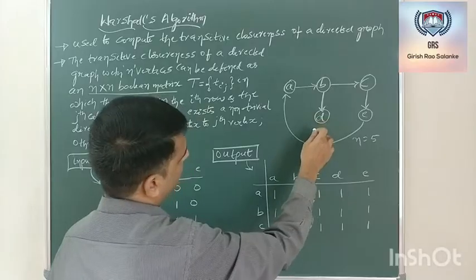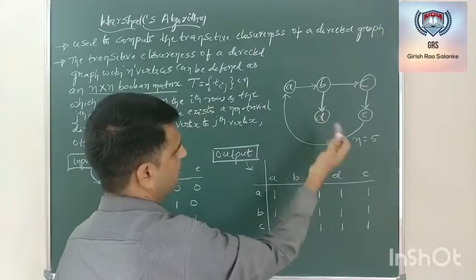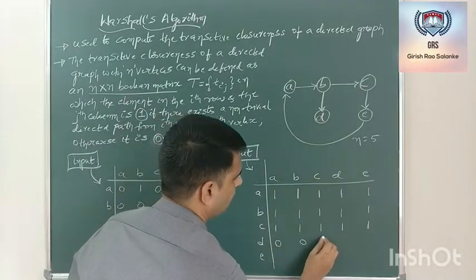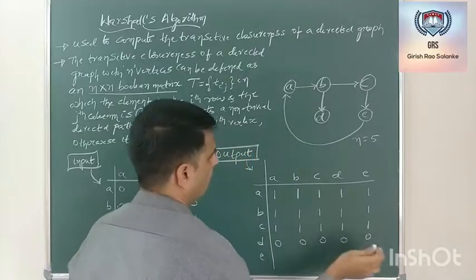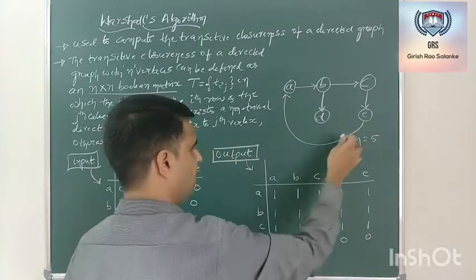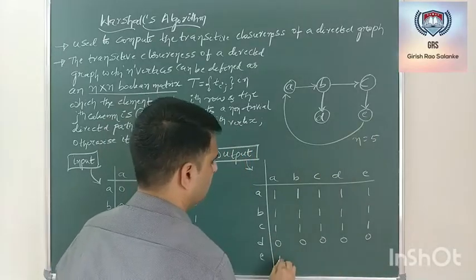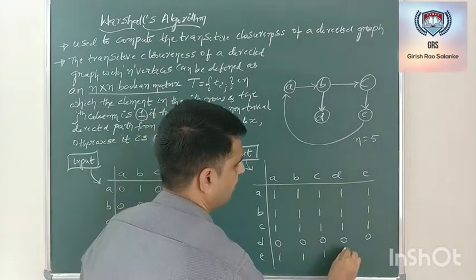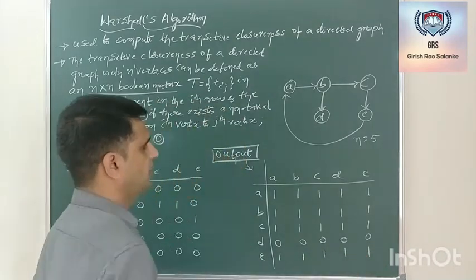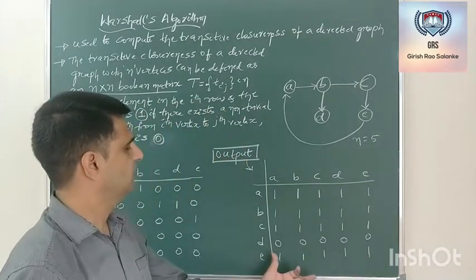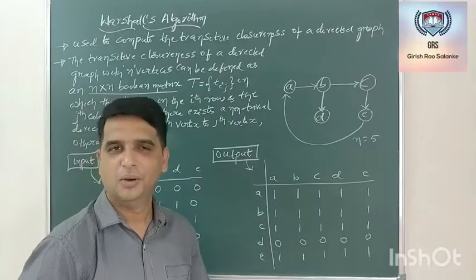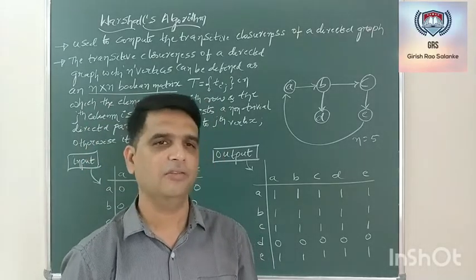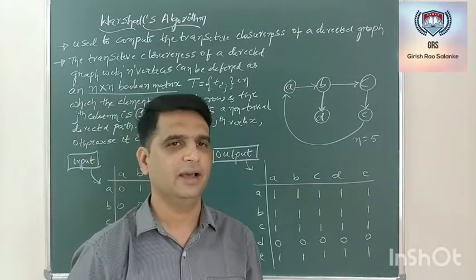From D, is there any outgoing edge? The problem is D does not have any outgoing edge at all. So under row D, all are 0. From E: A is reachable, B is reachable, C is reachable, D is reachable, and E is reachable. So this is the output of the Varshal algorithm — note that it gives the transitive closures of a directed graph.